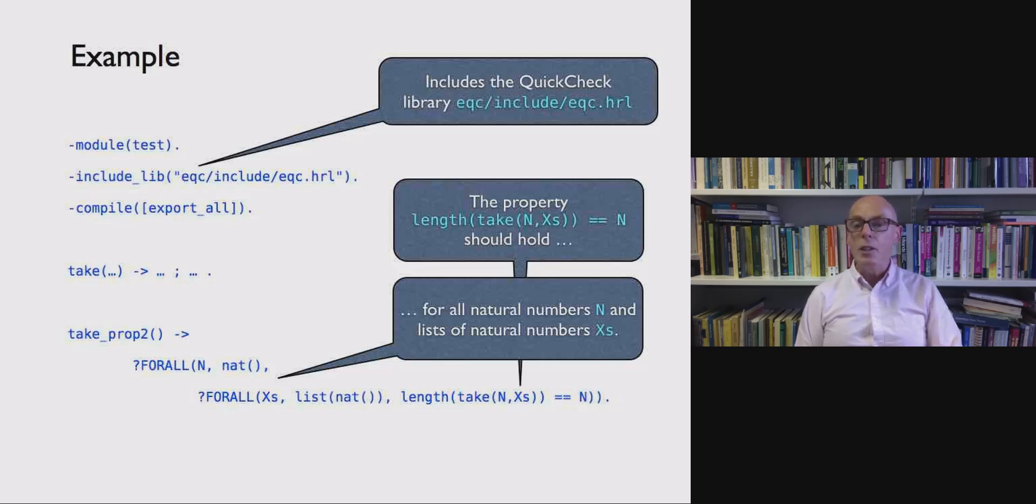But let's look at a particular example. So here we've included the QuickCheck library. We include EQC, include EQC.HRL. And what you see here is a statement of a property. And the property we've got here is that length of take N of X's should equal N. So it says if we take N elements from a list we ought to have N elements. And the property says this should hold for all natural numbers and for all lists of natural numbers. So that's the statement of the property.